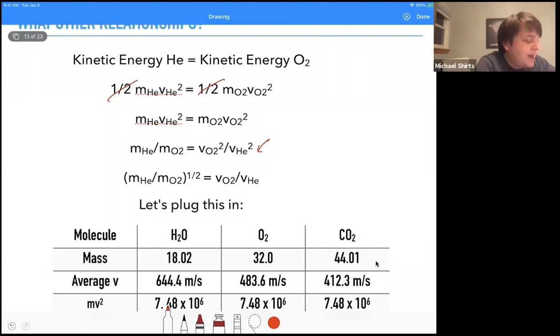We get a ratio of masses is equal to a ratio of the square of the velocity. So if we take the square root, then we can see that this ratio of the velocities is equal to the square root of the masses. And again, just double checking, plug it in.